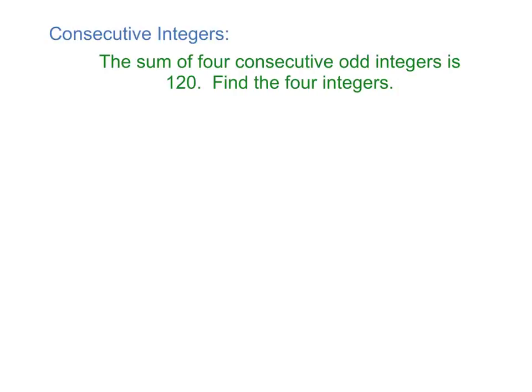So this story problem says the sum of 4 consecutive odd integers is 120. So the sum, that means adding, we're looking at 4 different numbers, and their consecutive odd is 120. We want to find those 4 integers. So my first integer is n.